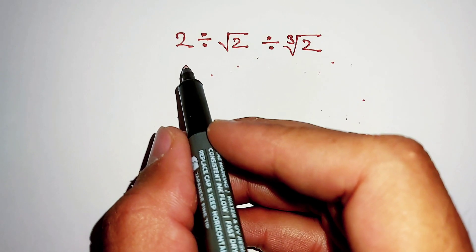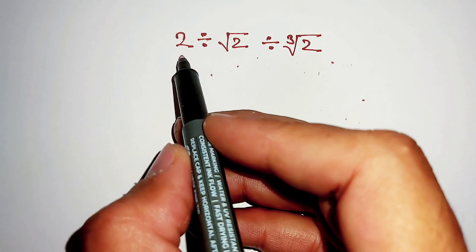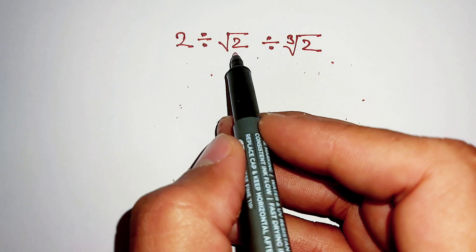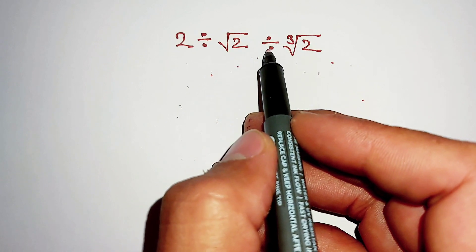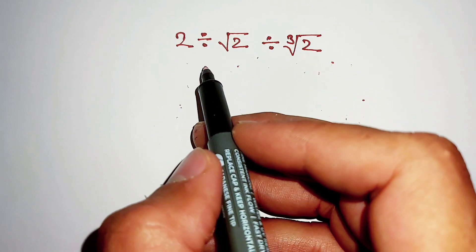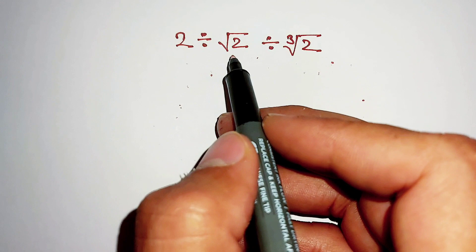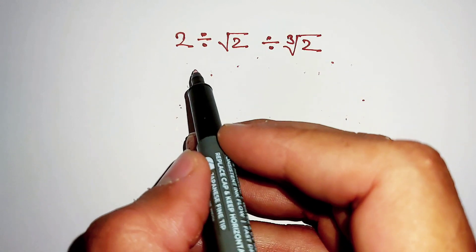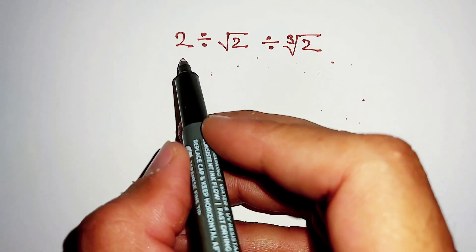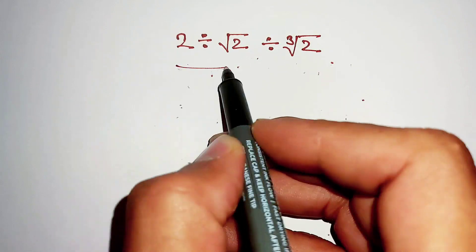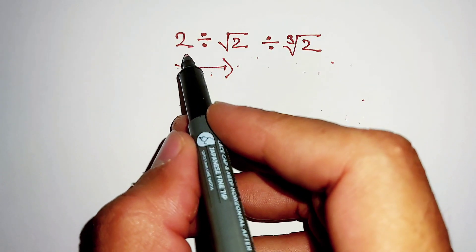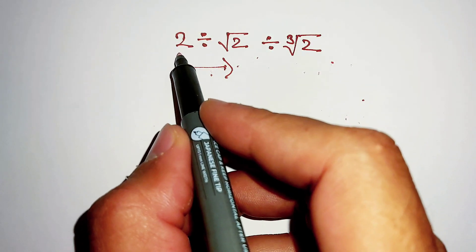Hello friends, the question is 2 divided by square root of 2, divided by cube root of 2. We have to simplify this expression. We will solve from left to right.